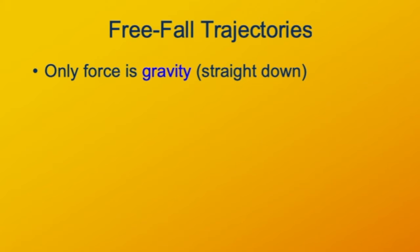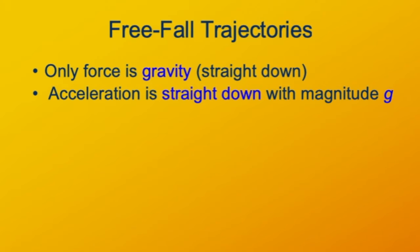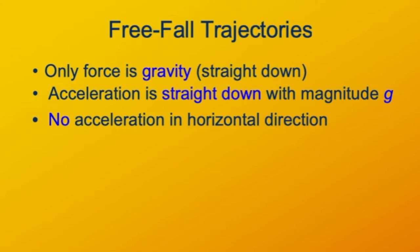We call freefall a situation in which an object is under the influence of gravity alone. In this case, the net force is gravity, which acts straight down. Therefore, the acceleration is also going to be straight down. The magnitude will be g, which on Earth is 9.8 meters per second per second. There's no acceleration in the horizontal direction because gravity only acts down — it does not have a component in the horizontal direction.